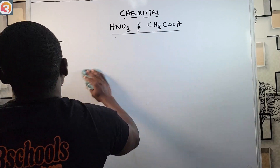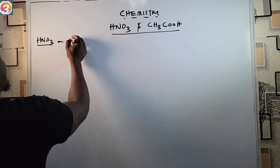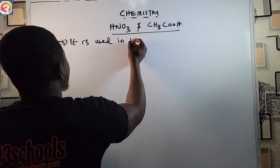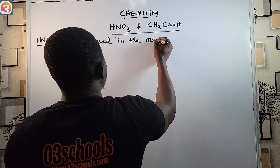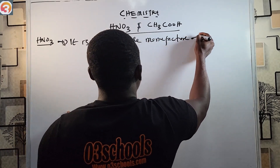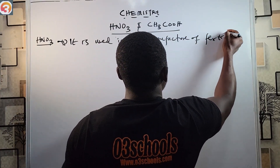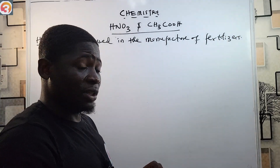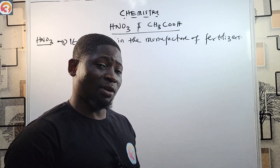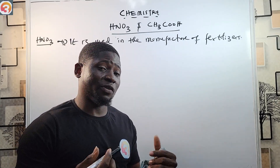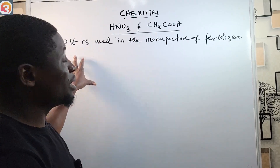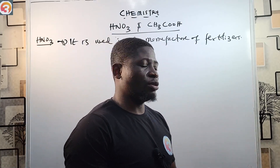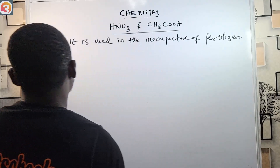Now let's look at the uses of HNO3. It is mostly used in the manufacture of fertilizers. Remember that H2SO4 is also used in the production of fertilizers, and similarly one of the major uses of HNO3 is in the manufacture of fertilizers. Please put that at the back of your mind.